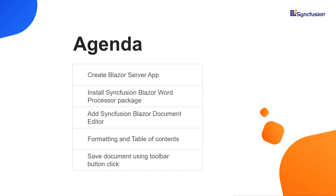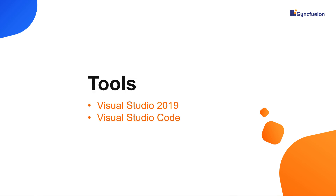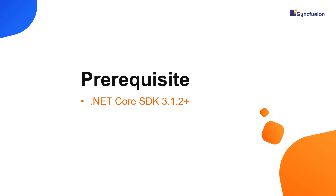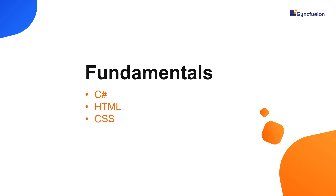I will create the Blazor project first. I can create a Blazor application either using Visual Studio 2019 or Visual Studio Code. In this video, I will create a server-side Blazor application using Visual Studio 2019. I have installed .NET Core SDK 3.1.2. To follow along with this video, you should have a basic understanding of C#, HTML, and CSS.